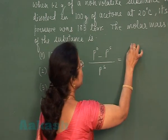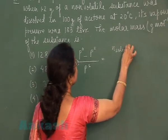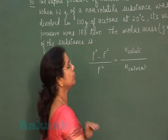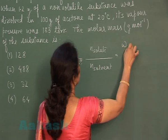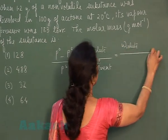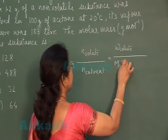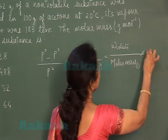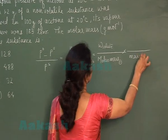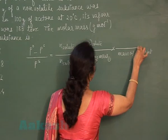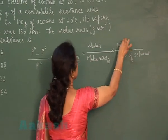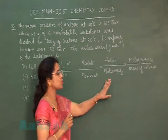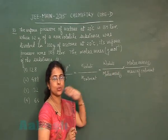To calculate relative lowering of vapour pressure, we use the formula: P0 minus PS upon PS equals moles of solute upon moles of solvent. Moles of solute can be written as mass of solute divided by molar mass of solute, and moles of solvent as mass of solvent divided by molar mass of solvent.